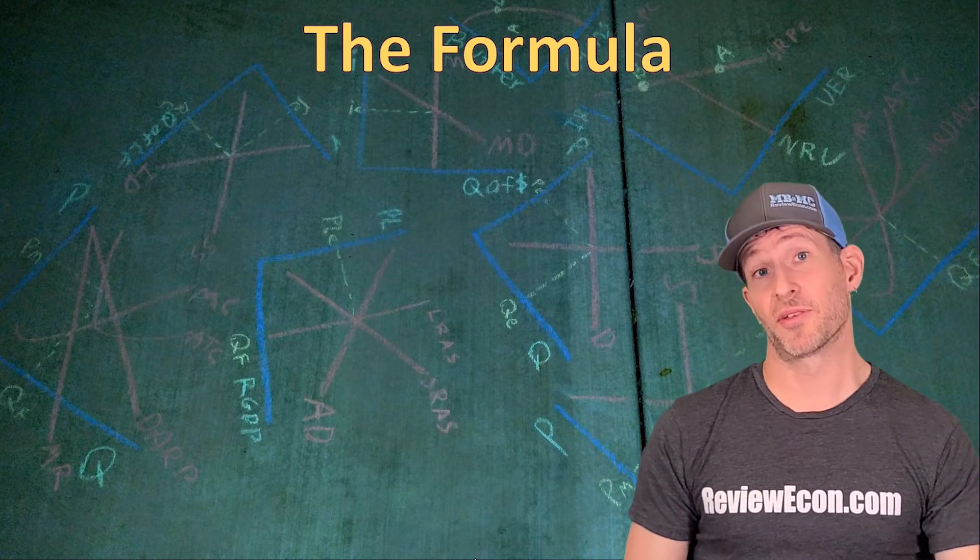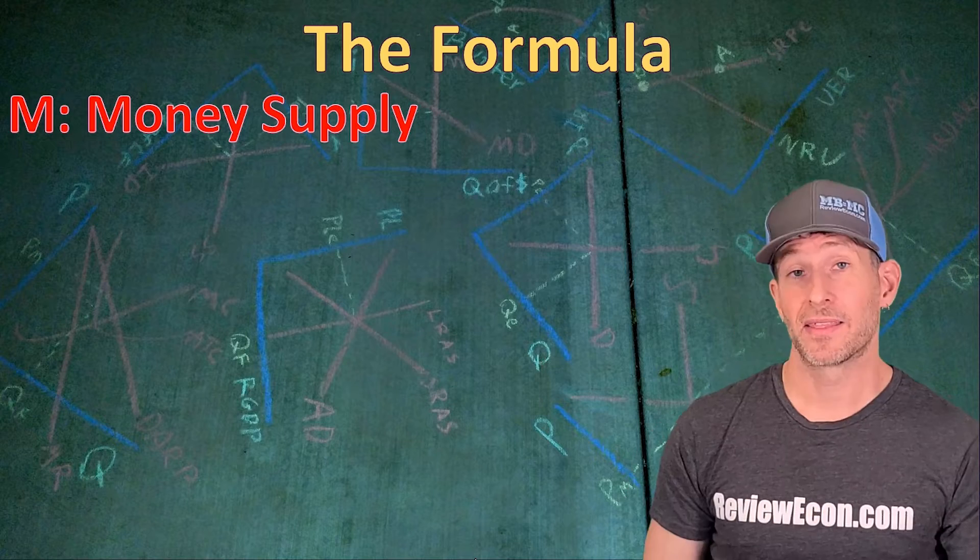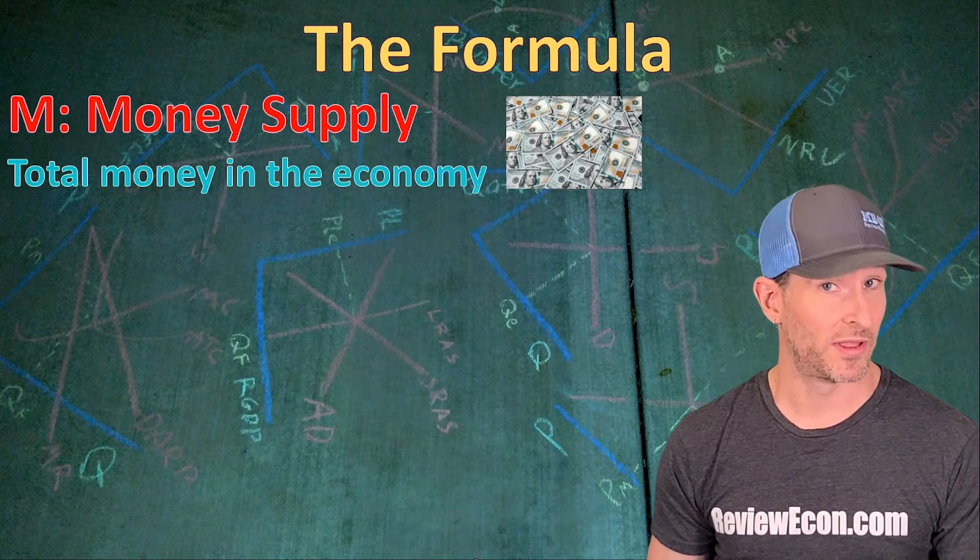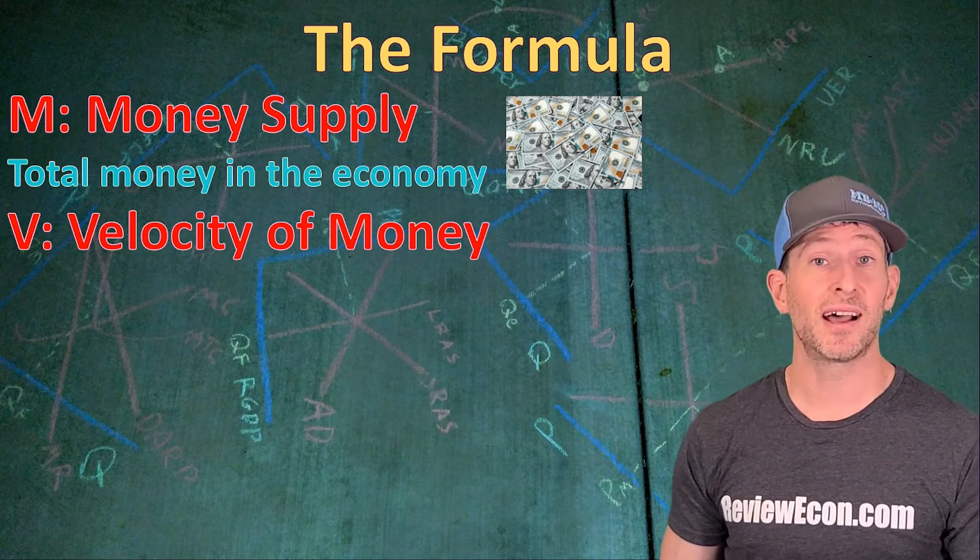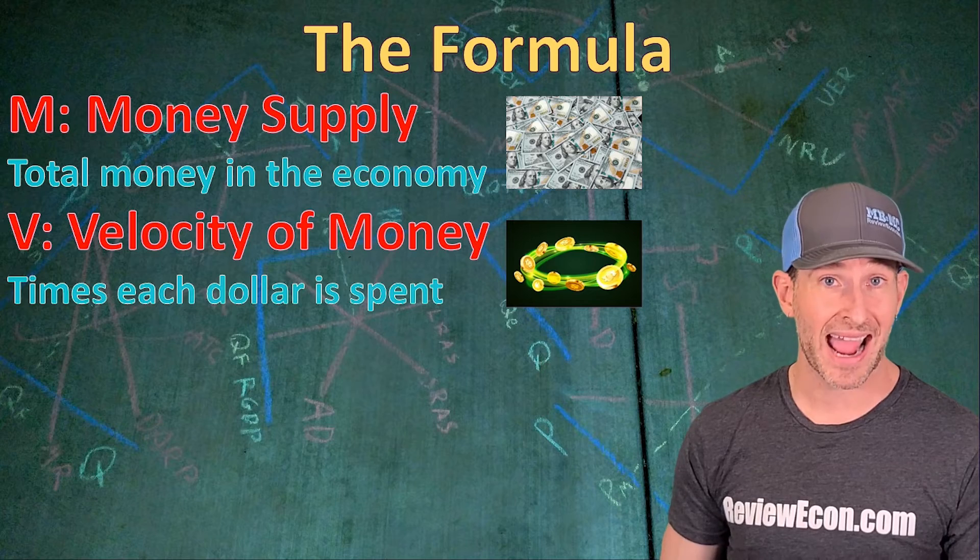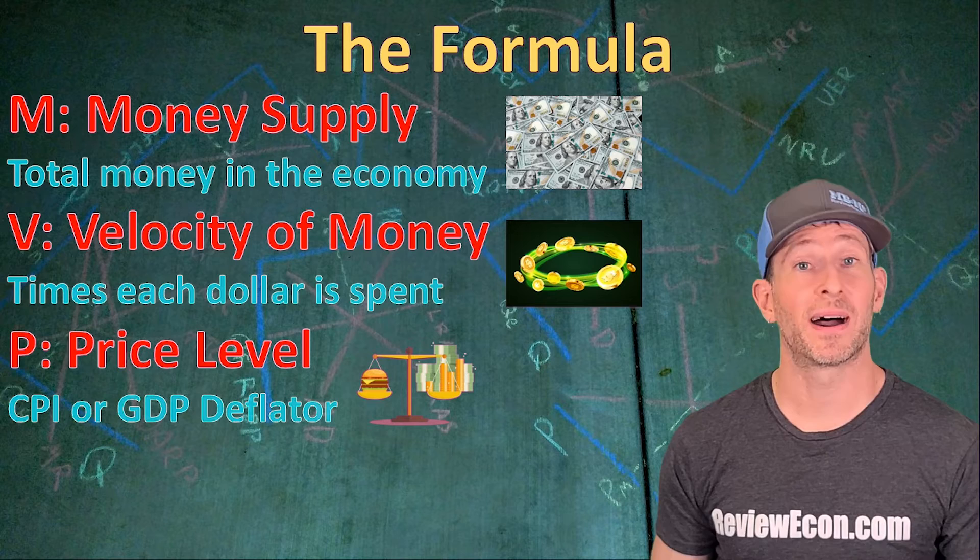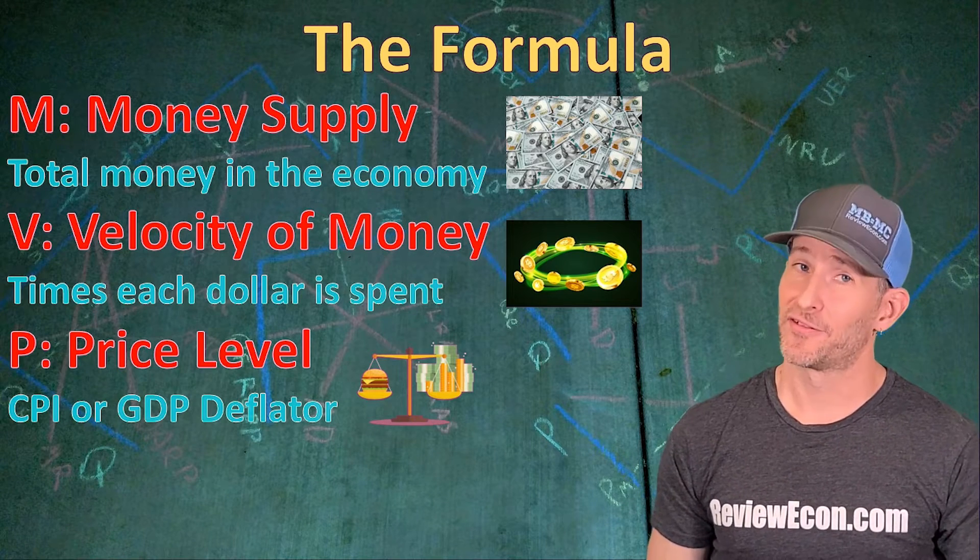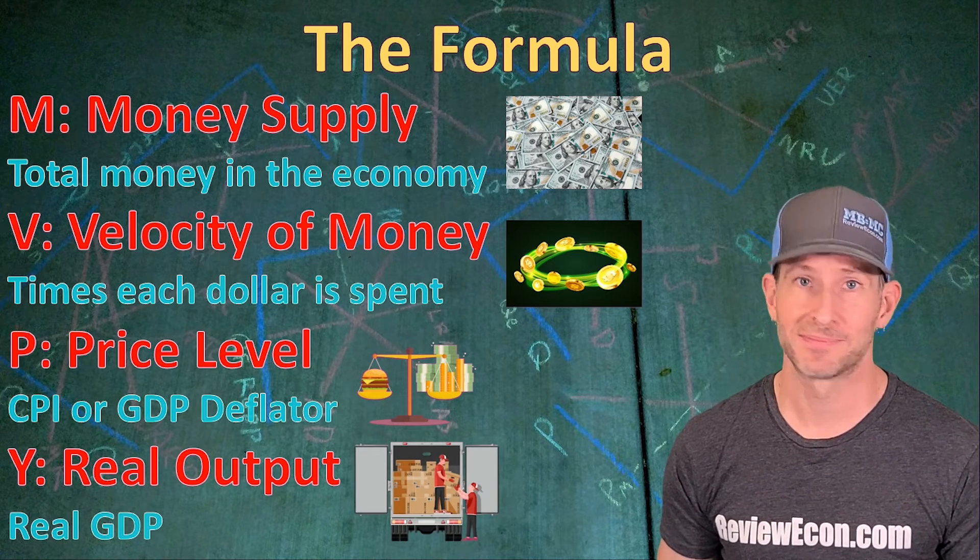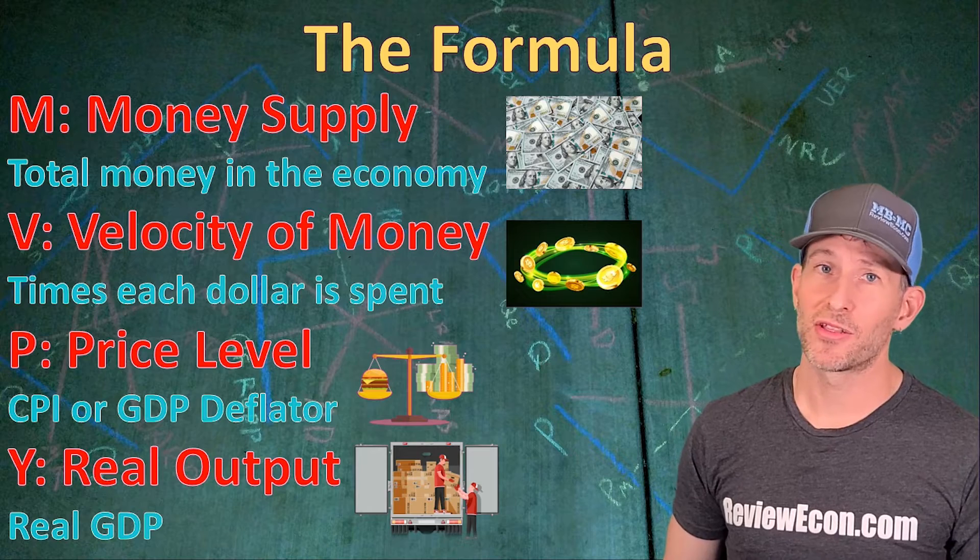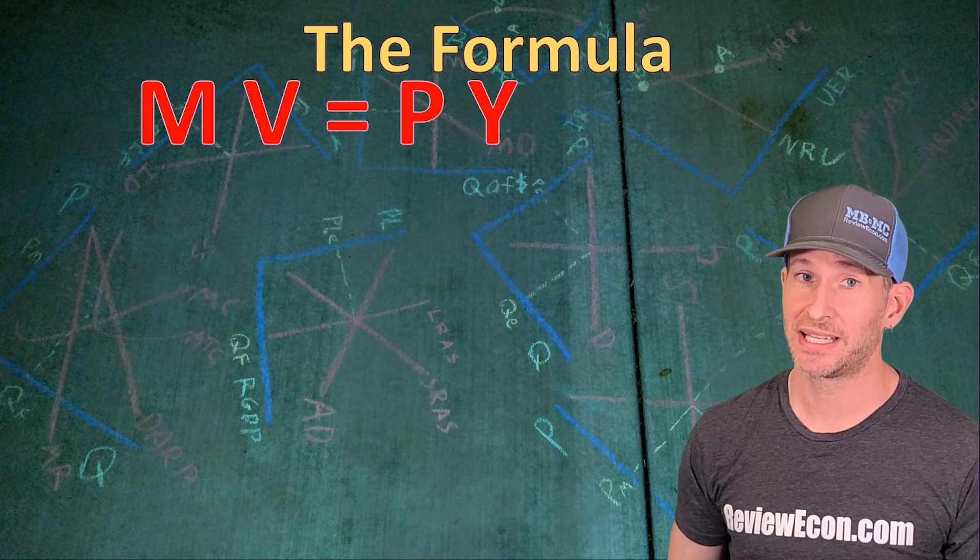So we have a mathematical formula for the monetary equation of exchange and here are the variables. First of all, we have the letter M. That is the M1 money supply. It's the total amount of money within an economy. The next variable is the letter V. That's the velocity of money and that's the number of times a dollar is spent on average within an economy. The third variable is the price level and that could be measured by the CPI or the GDP deflator. And the fourth variable is the letter Y. That is real output or real GDP. Also called national income. Now, take all those variables together and it gives us our formula MV equals PY.